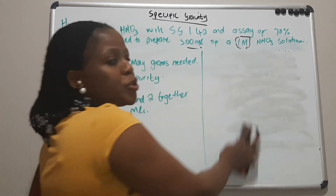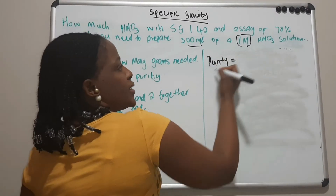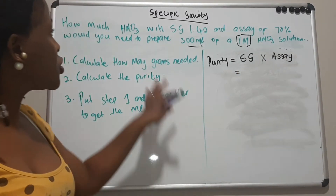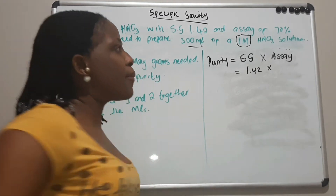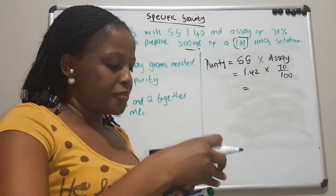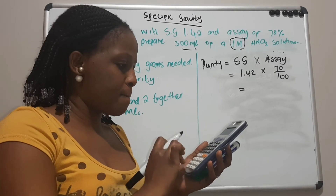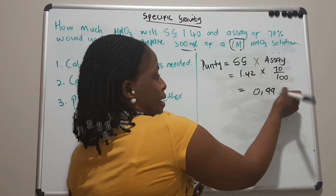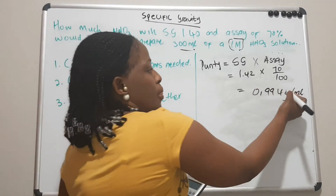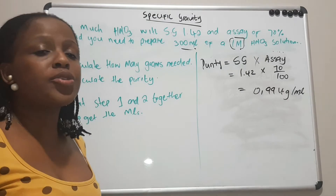For step two, we calculate the purity. The formula is: purity equals specific gravity multiplied by the assay. The specific gravity is 1.42 and the assay is 70%, which is 70/100. Putting this into the calculator: 1.42 × 0.70 = 0.994 grams per milliliter. So 0.994 grams per mL is the amount of pure nitric acid in one mL of the concentrated solution. That completes step two.